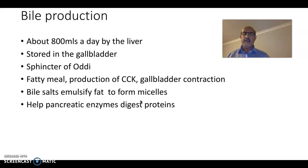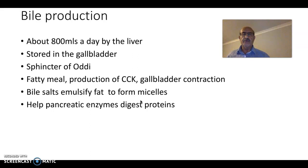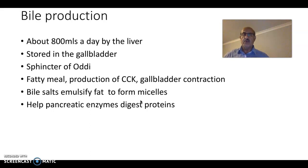Once a fatty meal hits the duodenum, the duodenal mucosa has endocrine cells that secrete cholecystokinin, which gets absorbed via the circulation and tells the gallbladder to contract. Contraction of the gallbladder leads to emptying of bile into the intestine to help with digestion — mainly through bile salts, which emulsify fat into absorbable hydrophilic micelles.